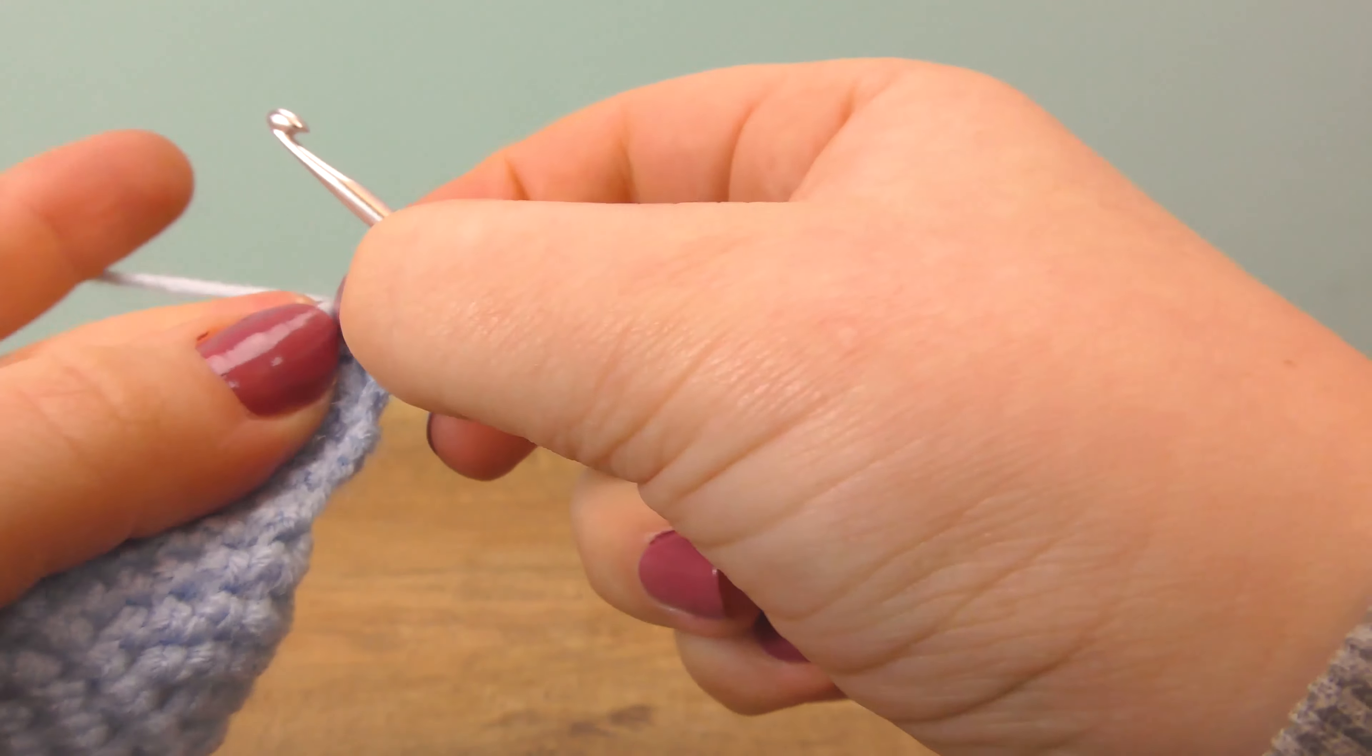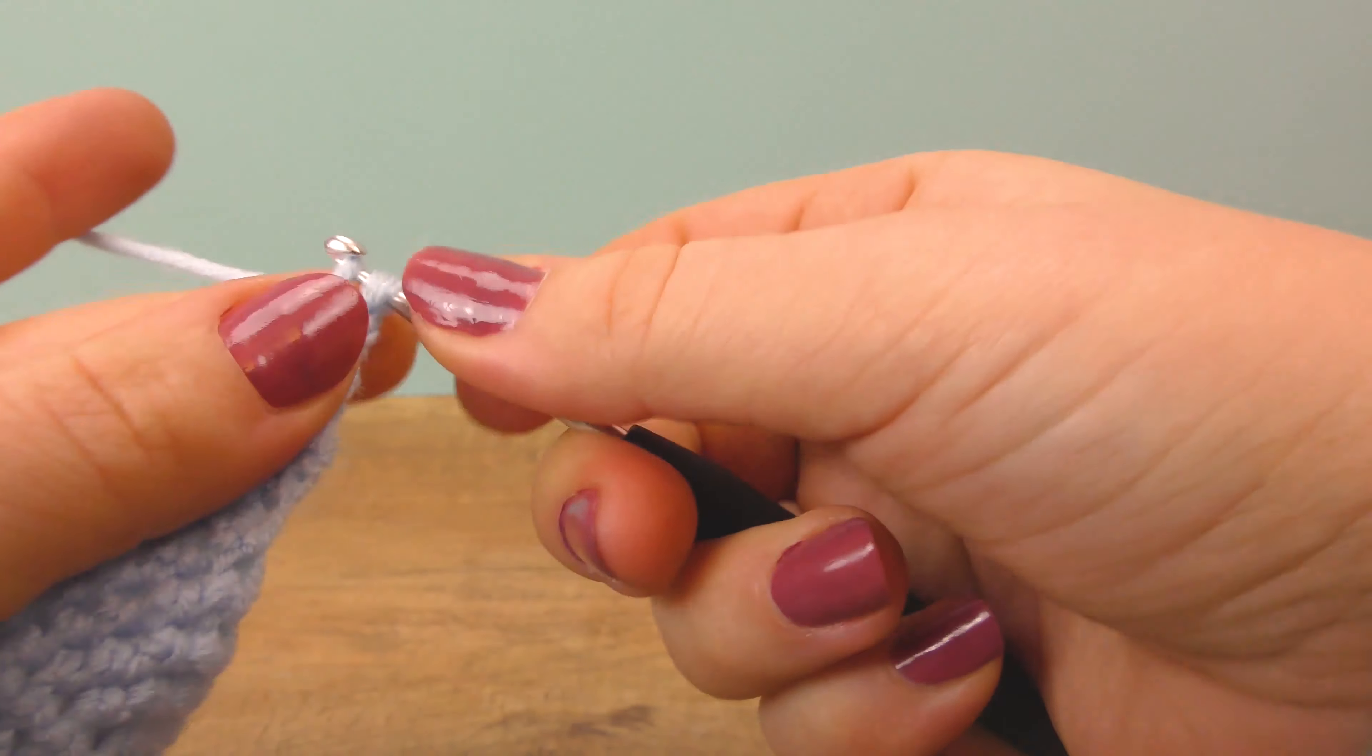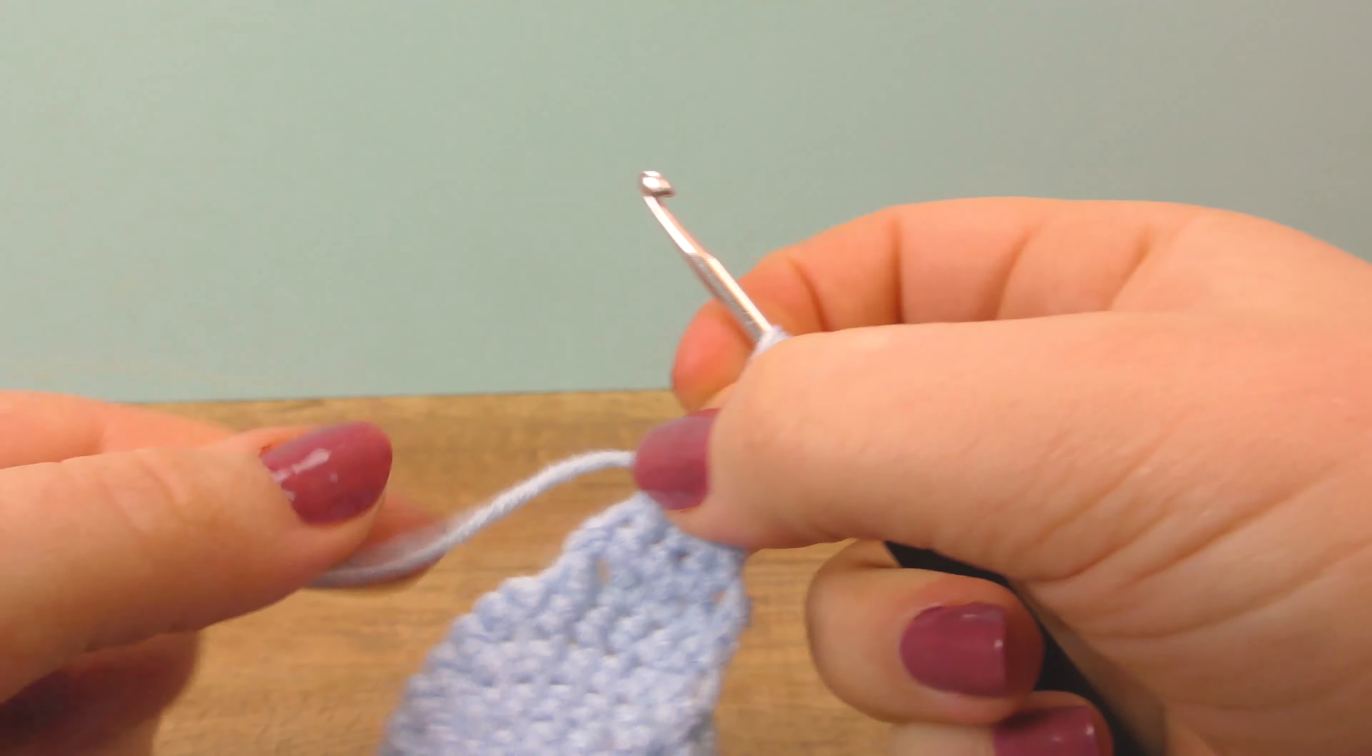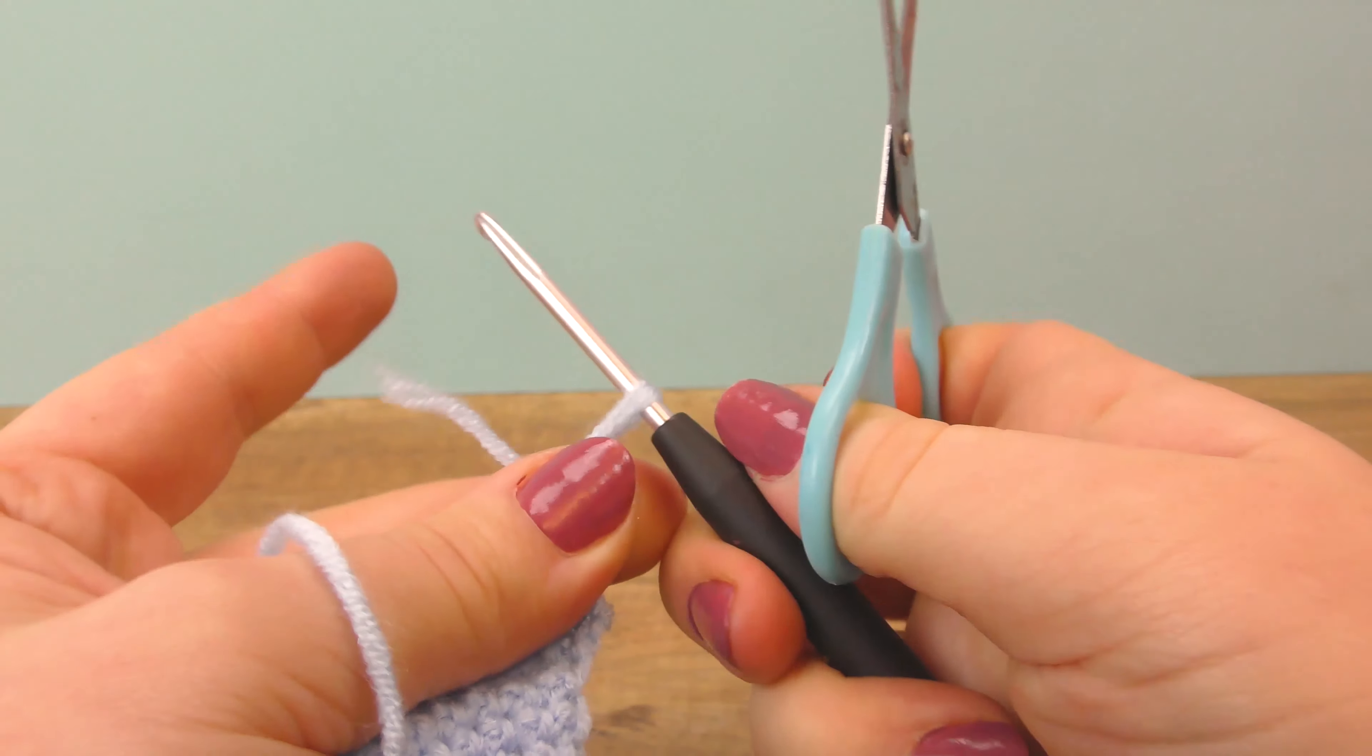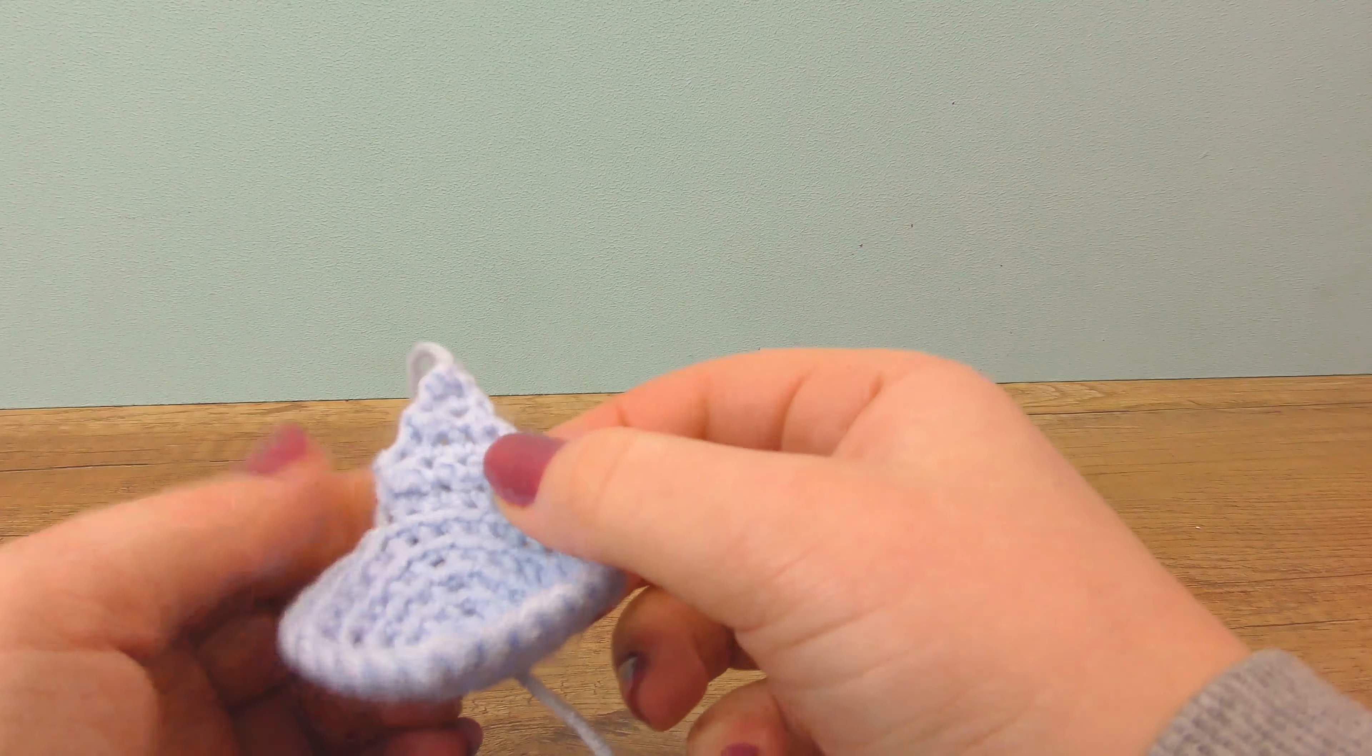Again turn, and then one regular row of two singles. Turn again, skip the first one and go through the second one, and finish with a slip stitch. Shorten the thread and then pull it tight. And now we have our first point.